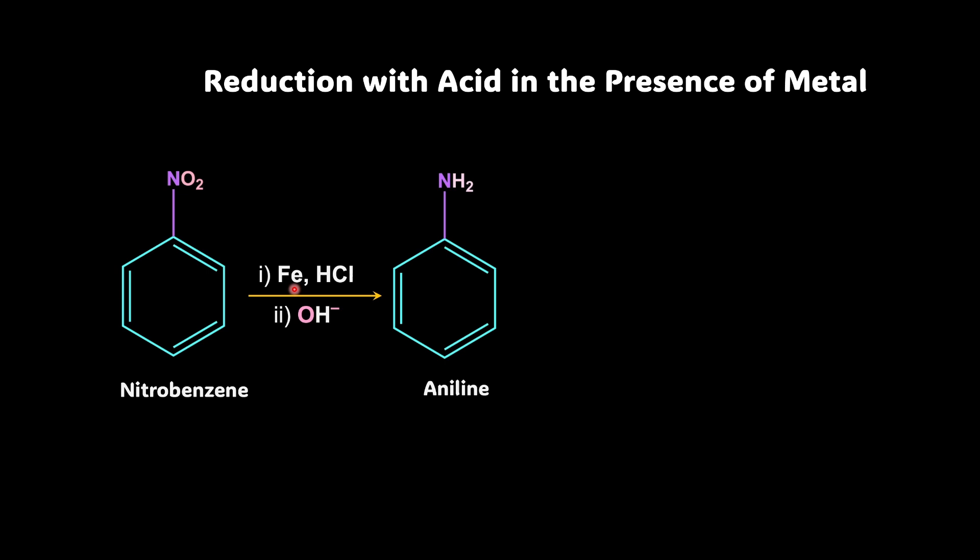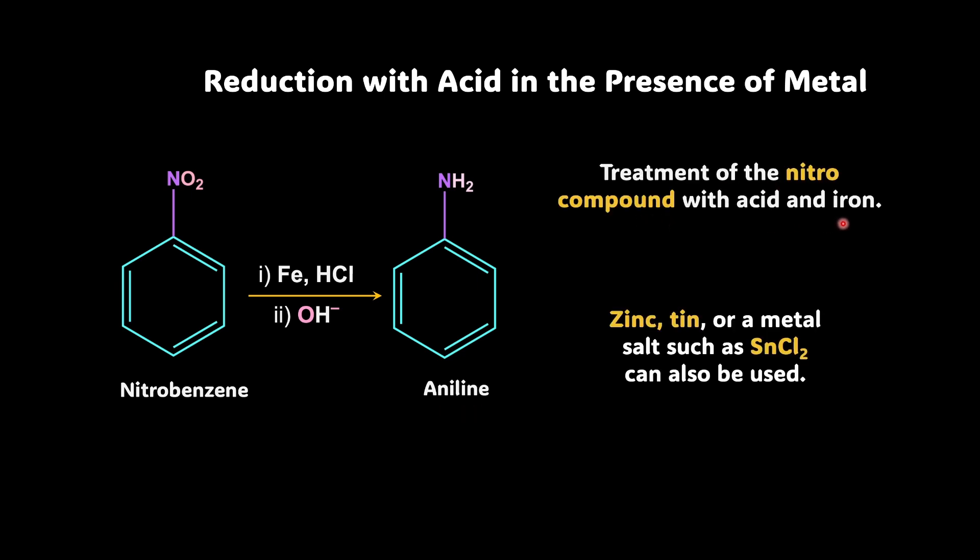And what you get is going to be an anilineum salt. After providing the basic backup, that's when you get aniline. So what you see? Treatment of the nitro compound with acid and iron and we can also use zinc, tin or a metal salt such as SnCl2. Okay, now let's see it in parts how exactly it is happening.